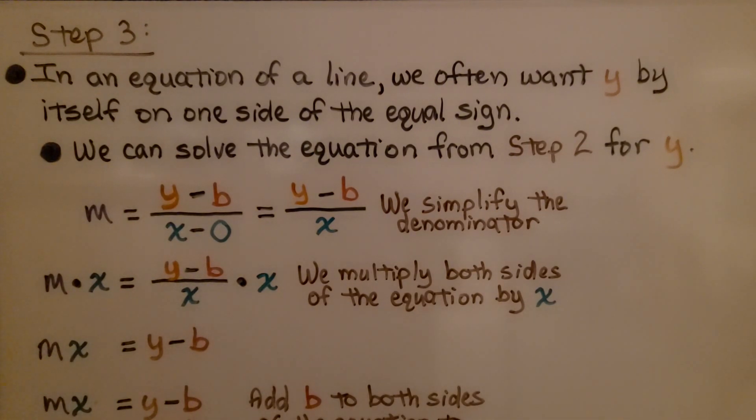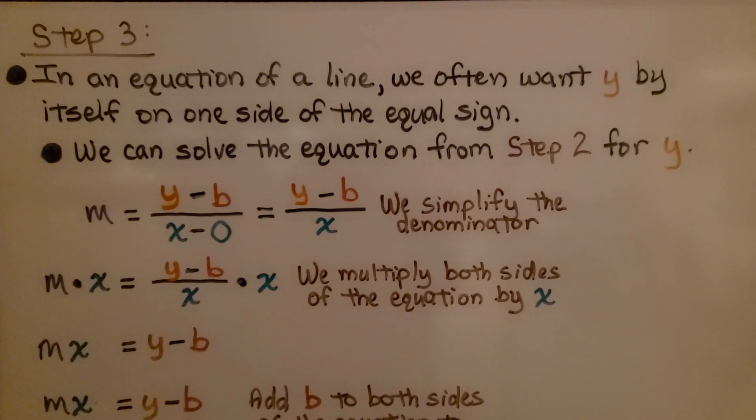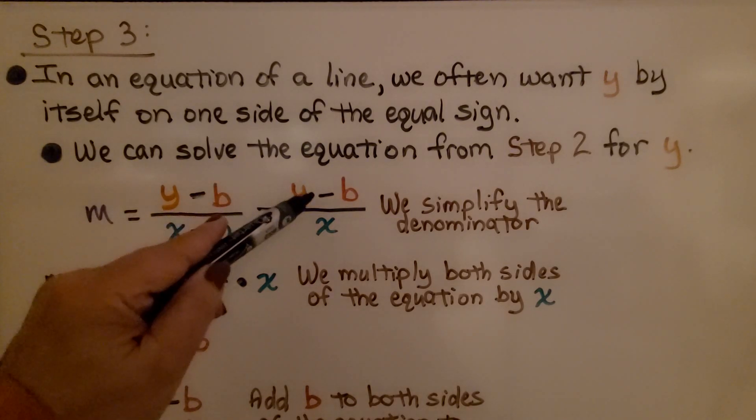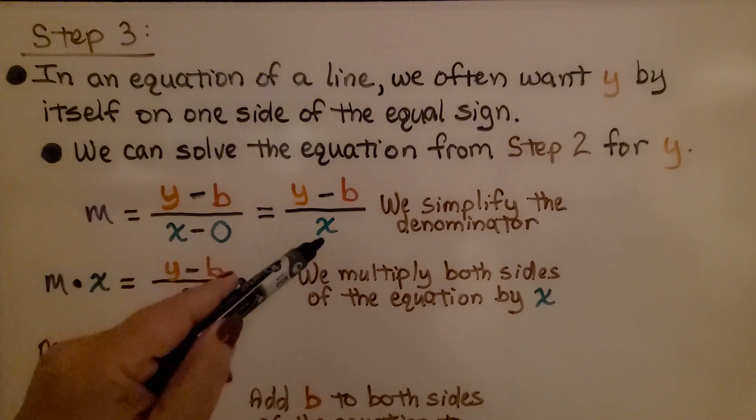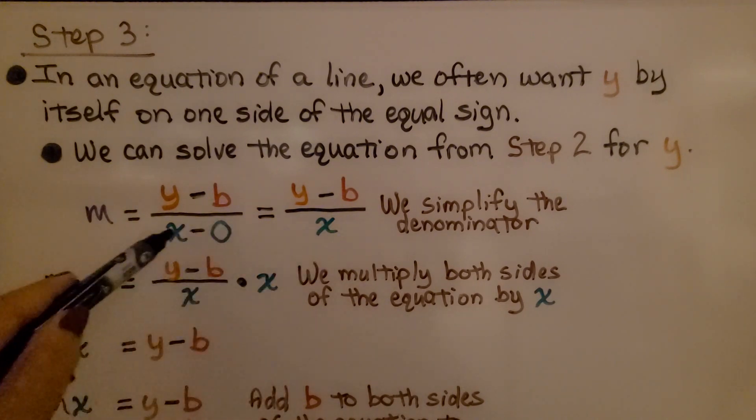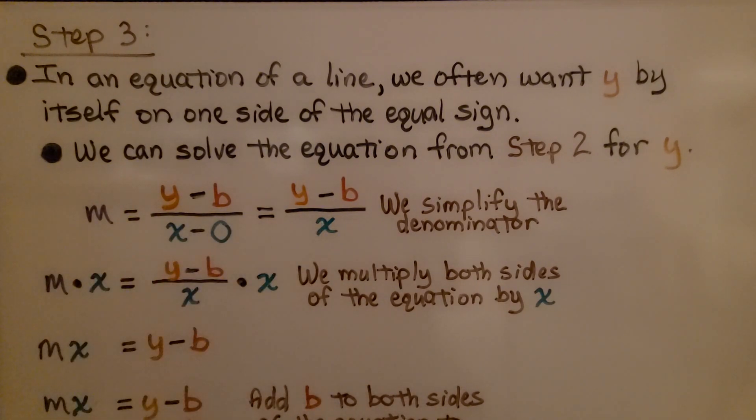So here's step three. In an equation of a line, we often want y by itself on one side of the equal sign. We can solve the equation from step two for y. We had y minus b over x. We simplified the denominator. x minus 0 is going to stay x, isn't it?